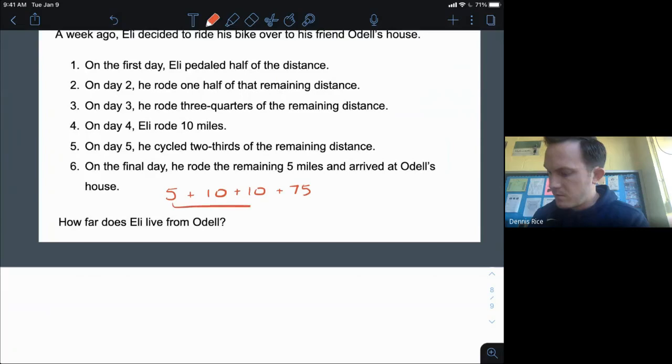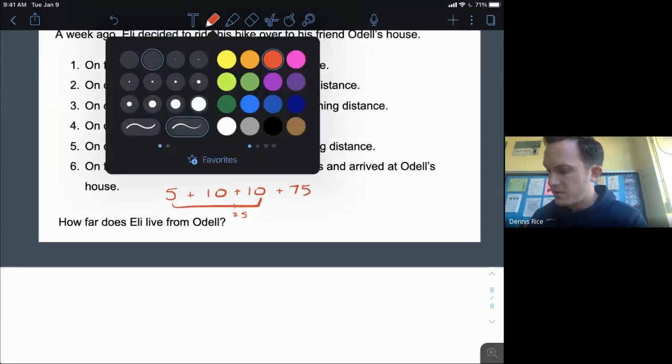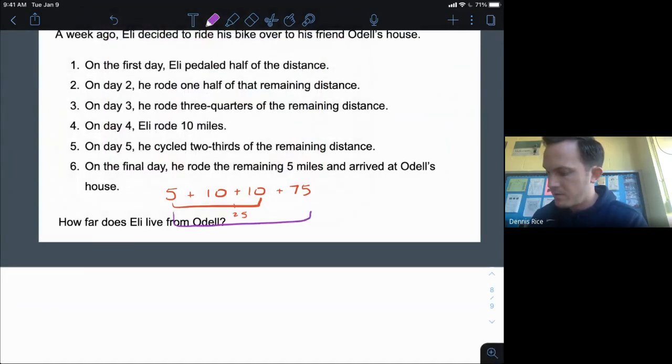On day two he rode half. That means that all this stuff that he did so far is also half, which is just 100, which means on day two he did 100 miles. And on day one, same thing there, he did half again. So our running total is 200, which means on day one he actually did 200 miles as well.